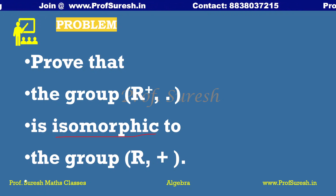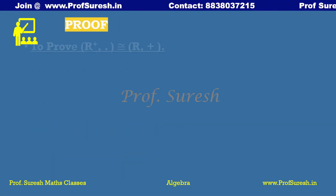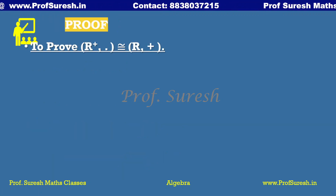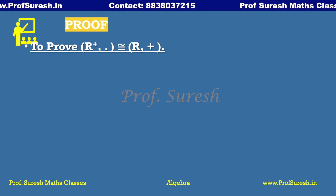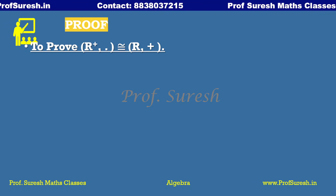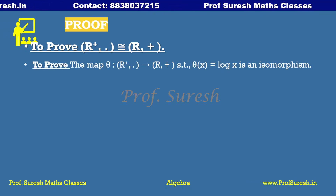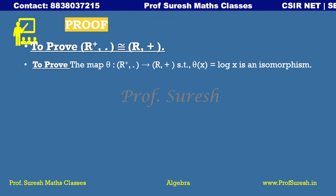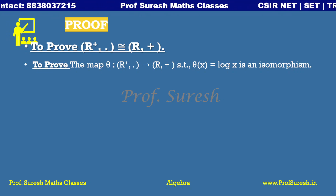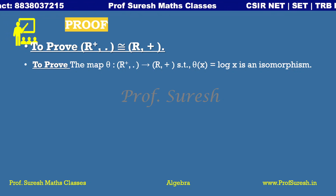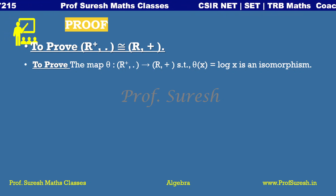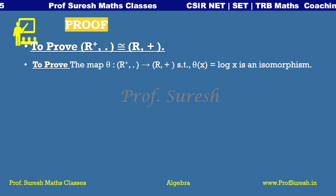We are making a map from R plus, dot to R, plus. Define the map theta from R plus, dot to R, plus such that theta of x equals log x. This is the domain.